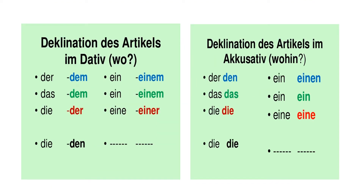Now let's see the articles we use in Dativ and Akkusativ. The Dativ articles are dem, der, dem, and in plural they are den plus -n. And for Akkusativ, as you know, there is only a change in the masculine article — der changes to den; das and die remain the same, there is no change. And also in the plural there is no change — plural die remains die itself.